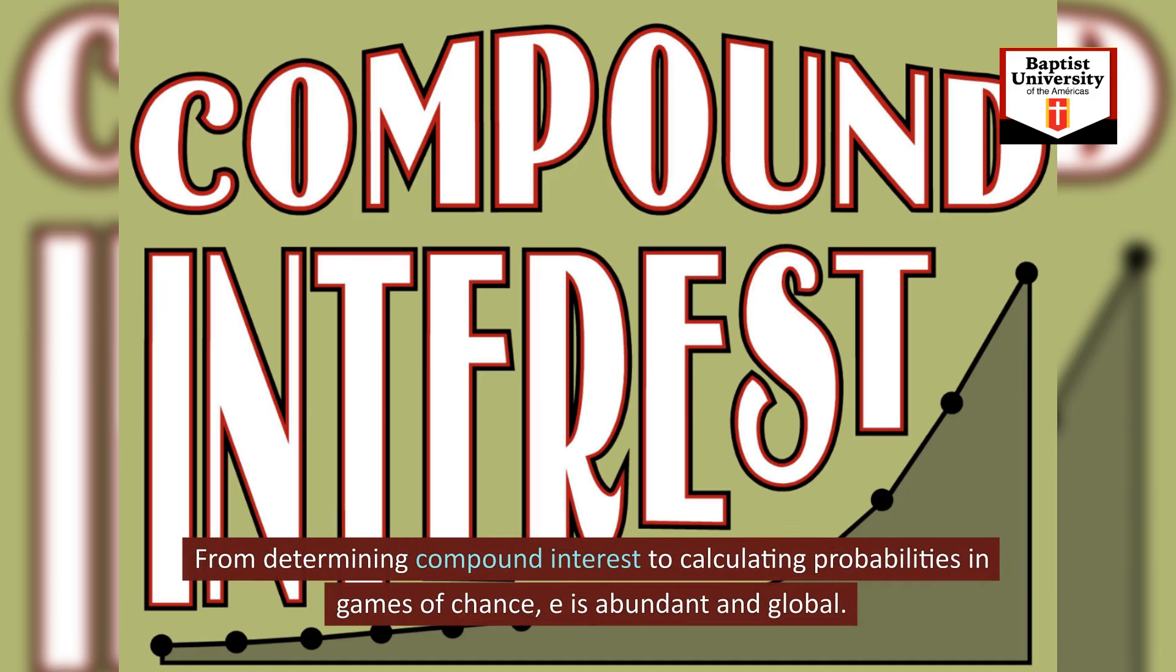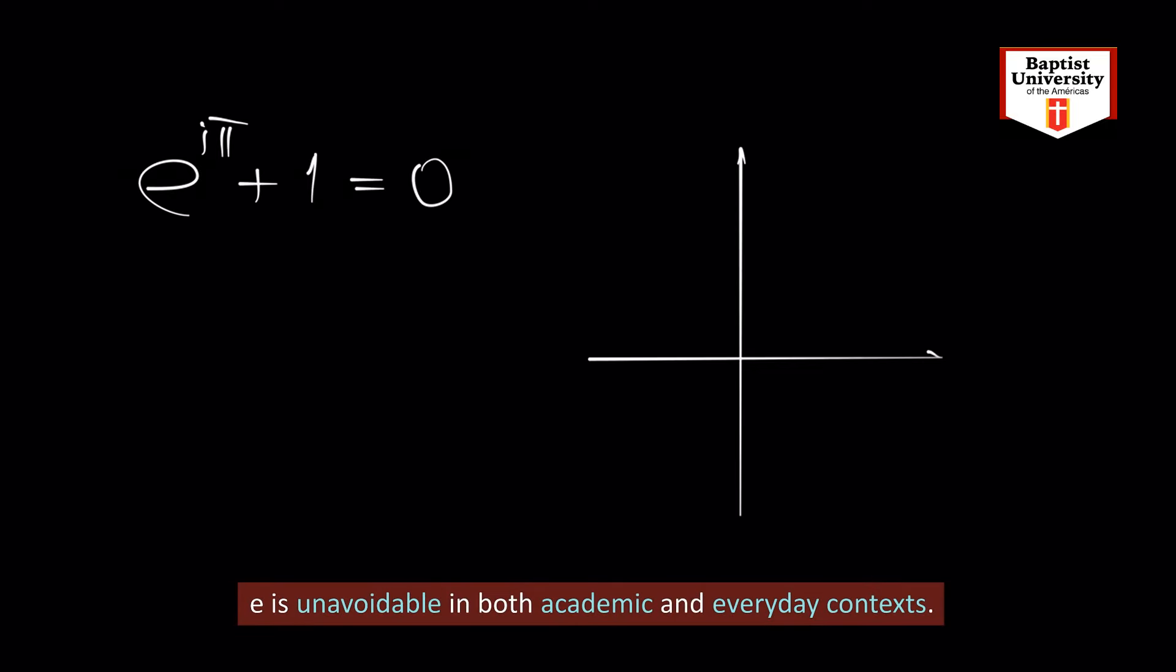From determining compound interest to calculating probabilities in games of chance, E is abundant and global. E is unavoidable in both academic and everyday contexts.